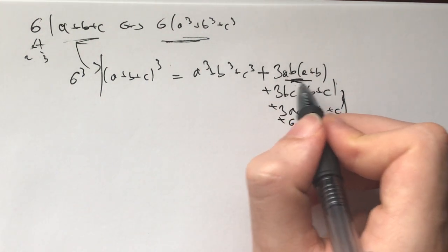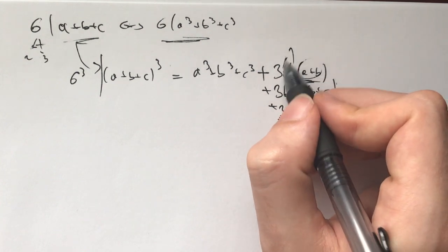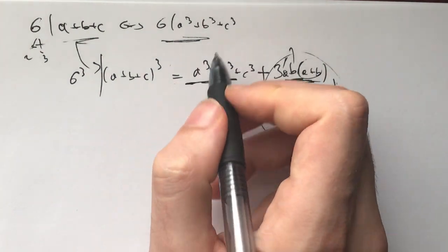Now, this is divisible by 2 because if a and b are odd, then this is even, if one of them is even, then it's divisible by 6. So 6 divides all of these, which means it divides this.